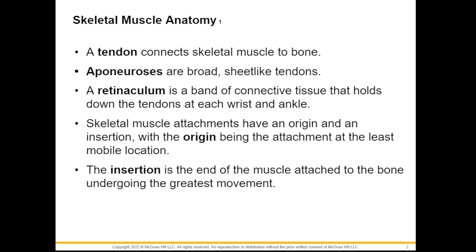Such as your tendon — please do remember that the tendon is the connection between muscle and bone. Aponeurosis also acts as a connection between bones and muscles, but their appearance is different compared to tendon. Aponeurosis appears broad and sheet-like, like paper. We also have retinaculum, which is a band of connective tissue that holds down the tendons at the wrist and ankles.